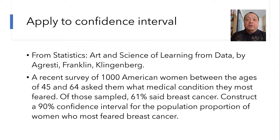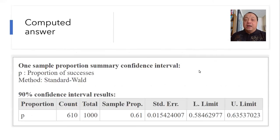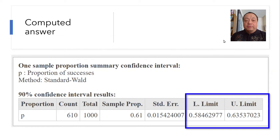A recent survey of 1,000 American women between the ages of 45 and 64 asked them what medical condition they most feared. Of those sampled, 61% said breast cancer. Ensure a 90% confidence interval for the population proportion of women who most feared breast cancer. Suppose you go through all the work and finally arrive at a confidence interval of 0.585 to 0.635.